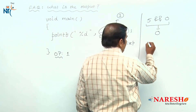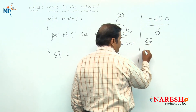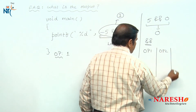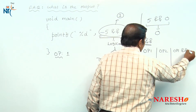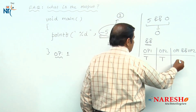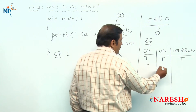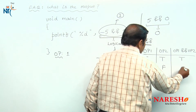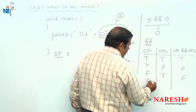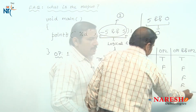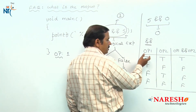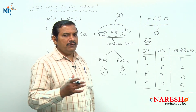Let us look at the truth table of the logical AND operator. It shows operand 1 and operand 2, and the result of operand 1 logical AND operand 2. If operand 1 is true and operand 2 is also true, the logical expression value is true. If any one of the operands is false, the logical expression value is false. False AND true is false; false AND false is false. This truth table can also be represented in terms of 1s and 0s. Let us replace T with 1 and F with 0.